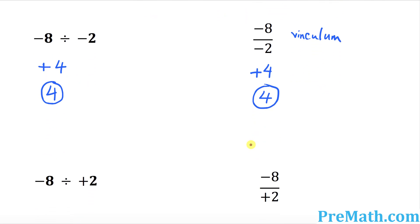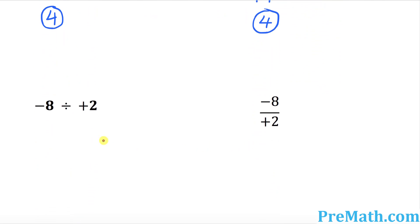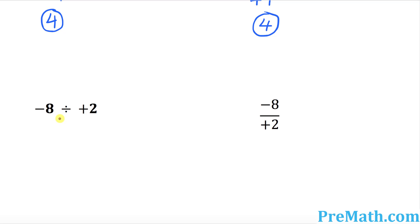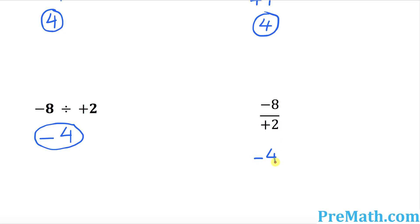How about the next example? Negative 8 divided by positive 2 — negative divided by positive would always be negative. 8 divided by 2 is going to be 4, so our answer is negative 4. Likewise in fraction notation, negative and positive gives you negative. 2 goes into 8 four times, so your answer is negative 4 as well.